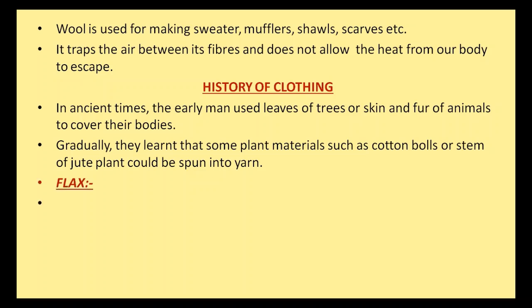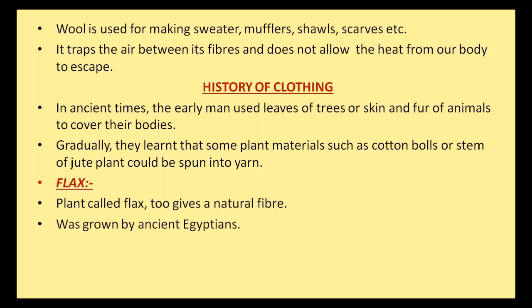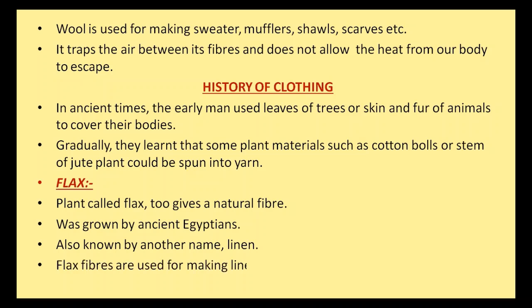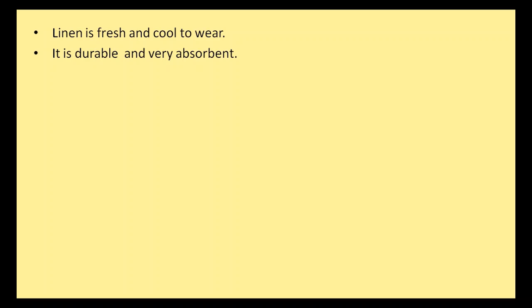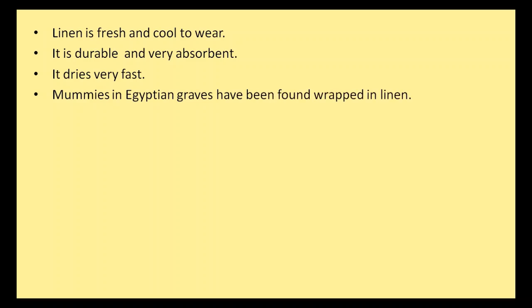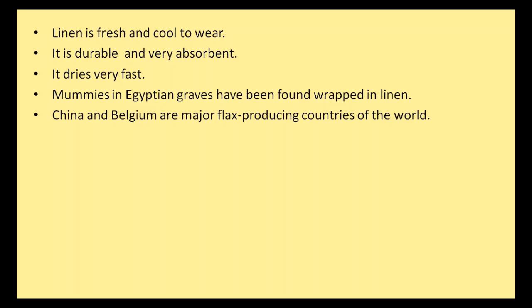Flax. Plants called flax give a natural fiber. Flax was grown by ancient Egyptians. Flax is also known by another name — linen. Flax fibers are used for making linen clothes. Linen is fresh and cool to wear. It is durable and very absorbent. It dries very fast. Mummies in Egyptian graves have been found wrapped in linen. China and Belgium are major flax-producing countries of the world.